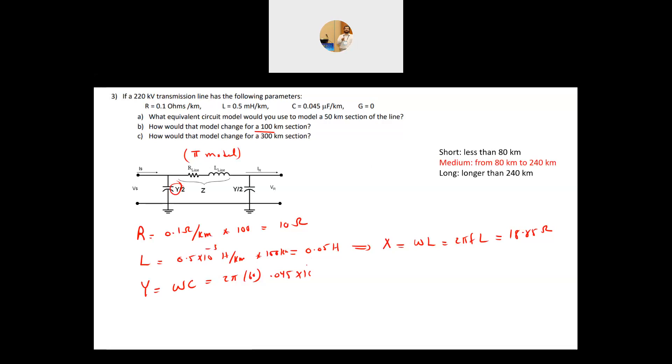C is equal to 0.045 times 10 to minus 6 farad, because this is micro, so I multiply by 10 to minus 6 to make it farad per kilometer, times the length which is 100 kilometer, and this will give me 1.69 millisiemens. Now this is a pi model, so half of the admittance at the beginning of the line, the other half is the other end, so this is Y over 2 is equal to 0.845 millisiemens.